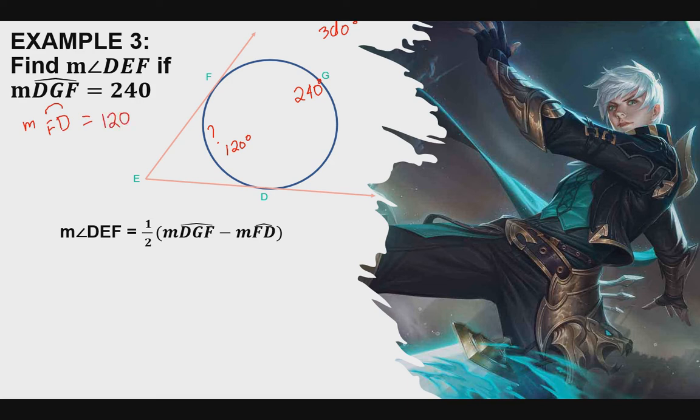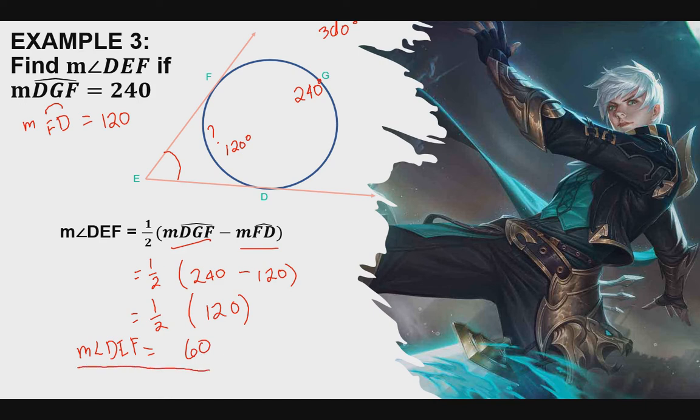Ngayon, pwede na natin hanapin yung ang angle DEF. So, one half times sukat na ito is 240 minus sukat po na ito is 120, which will be equal to 120 or 120 times one half. And ang kalahati ng 120 is what? Very good. 60. So, the measure angle DEF is 60.